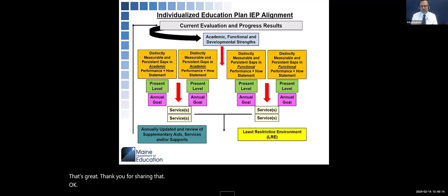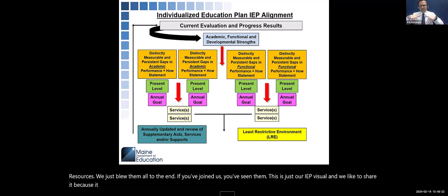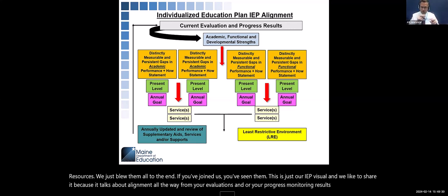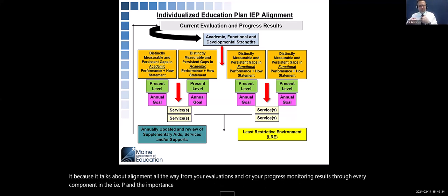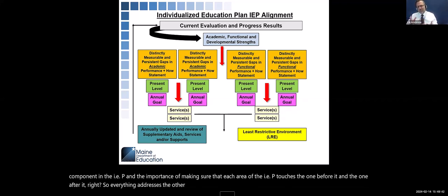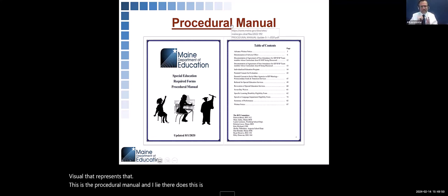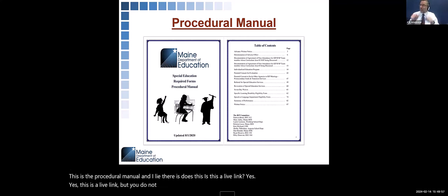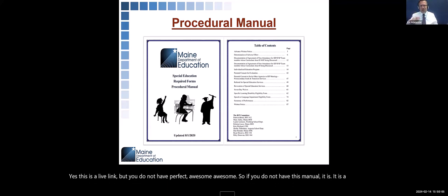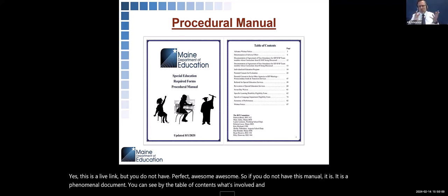For resources: here is our IEP visual, which shows alignment from your evaluations and progress monitoring results through every component of the IEP — the importance of making sure each area of the IEP connects to the one before and after it. And here is the procedural manual — it's a live link also dropped in chat. It's a very user-friendly document. Page 26 talks more specifically about outcome-based behaviors.